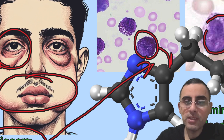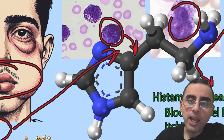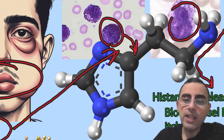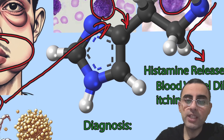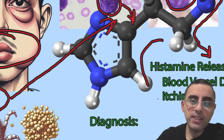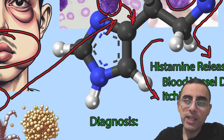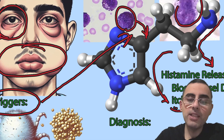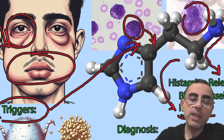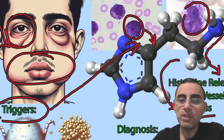This overreaction activates basophils and mast cells. Mast cells release histamine and other inflammatory agents. Histamine causes dilation of small blood vessels, and dilation causes fluid to leak from blood vessels into surrounding tissue, causing swelling of the skin. Histamine also binds to receptors on neurons, which causes itchiness.